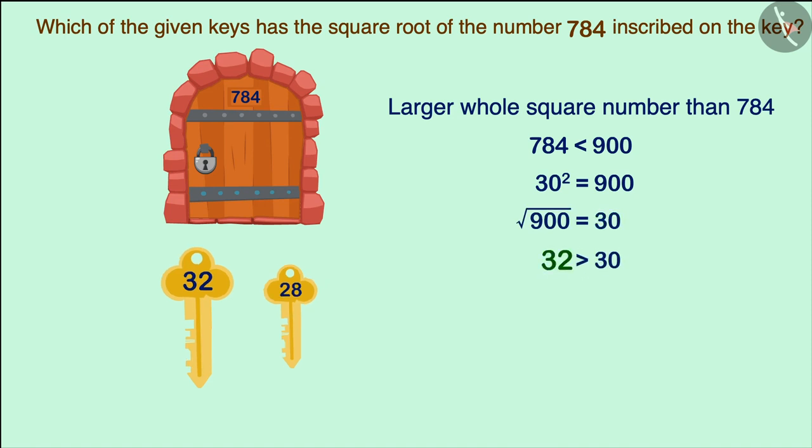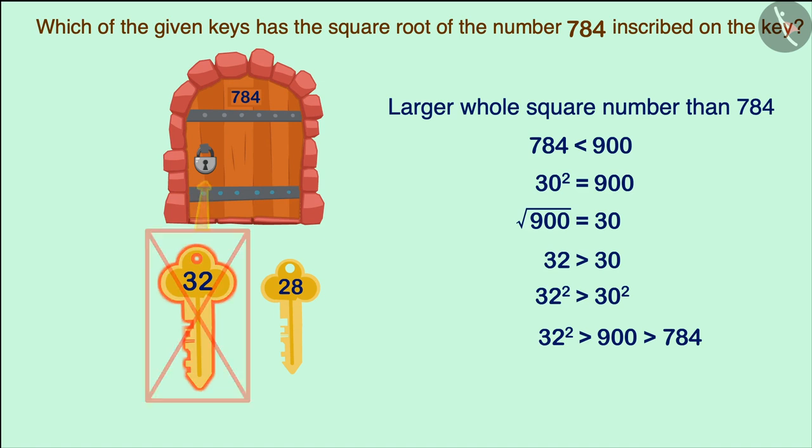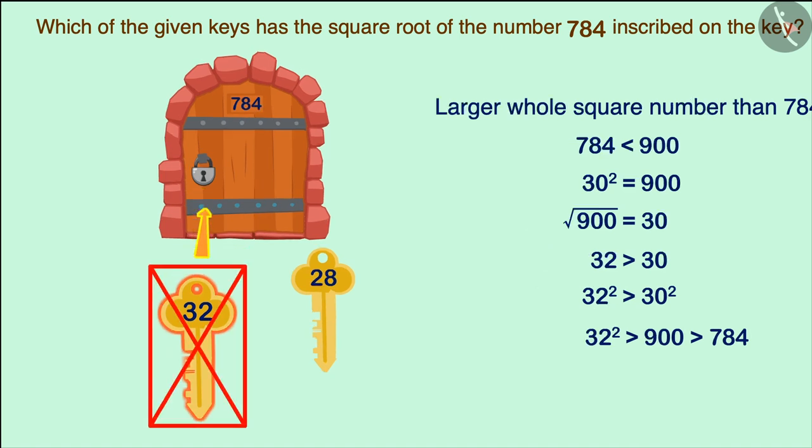Because 32 is greater than 30, then the square of 32 will be greater than the square of 30. That is, the square of 32 will not be equal to 784. It would rather be bigger than that. Therefore, the key with the number 32 will not open the lock.